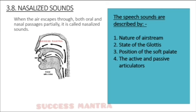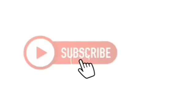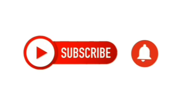These subtopics under the articulatory process are very brief and are asked mainly in two-mark questions, but they are very important for understanding the depth of phonetics. In the next video we'll discuss vowels and consonants, their phonetic symbols, and pronunciations. If you have any questions, please mention them in the comment box, and if you found this video useful, please like, share, and subscribe.